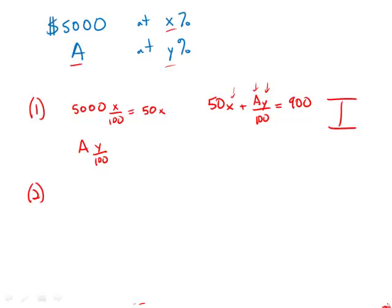Statement number two, by itself, tells us that Hannah invested the $5,000 at 6% simple interest. So, we just know that X equals 6%. Well, just knowing the value of X by itself tells us nothing about Y or A. So, this statement by itself is insufficient.